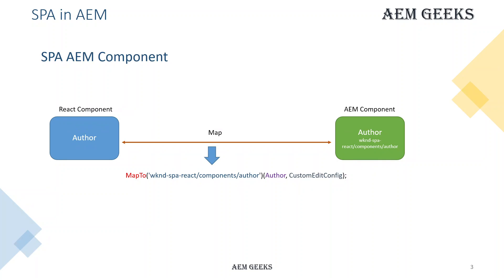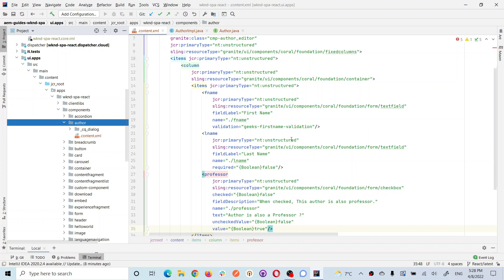The custom edit config is used so that when you drag and drop the component, before you edit it, you see the title of that component or something to display — like a placeholder indicating where the component is placed. You can name it anything. I created a very simple component called 'author' which has just three dialog fields: first name, last name, and professor. Professor is a checkbox. I only have the dialogue, nothing else.